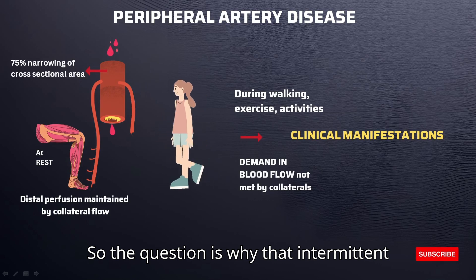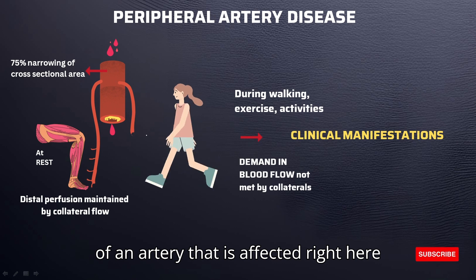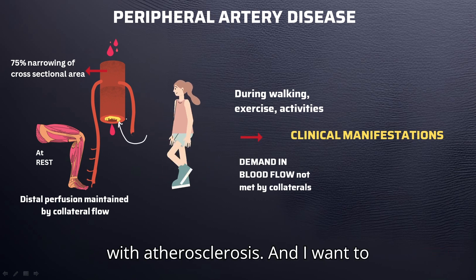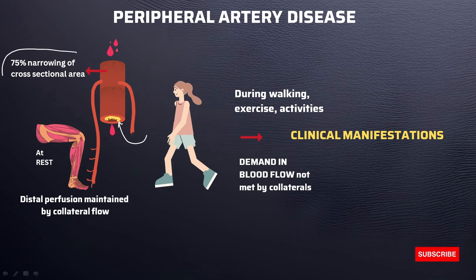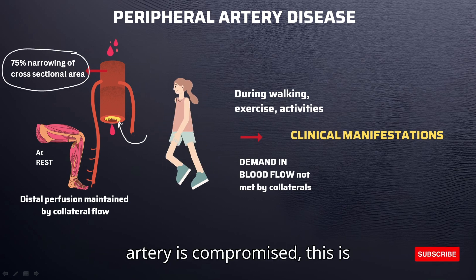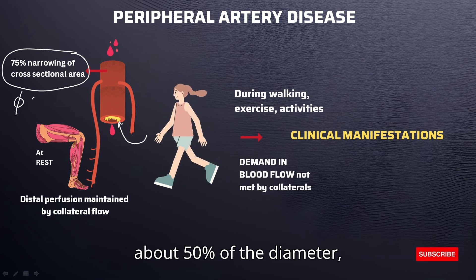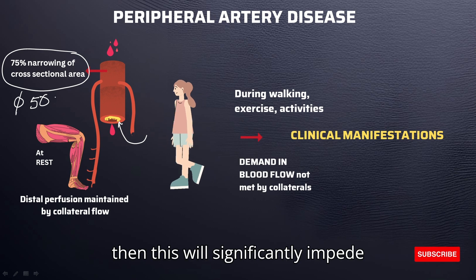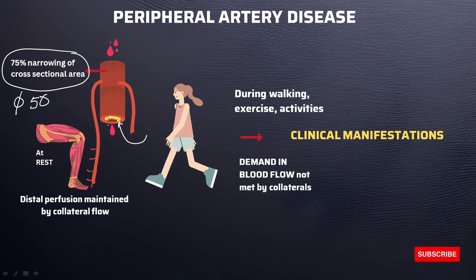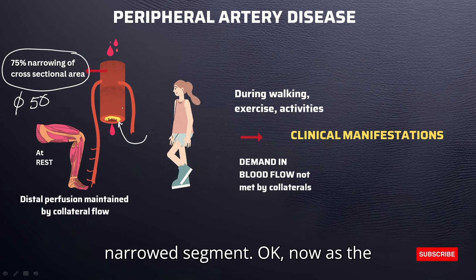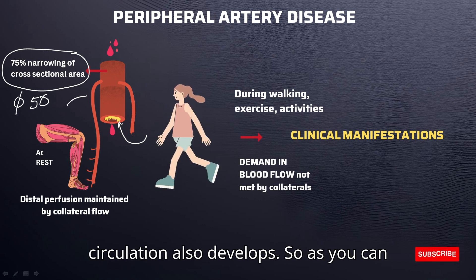Regarding intermittent claudication: if 75% or more of the cross-sectional area of the artery is compromised — about 50% of the diameter — this will significantly impede blood flow across the narrowed segment. As the disease progresses, collateral circulation also develops.